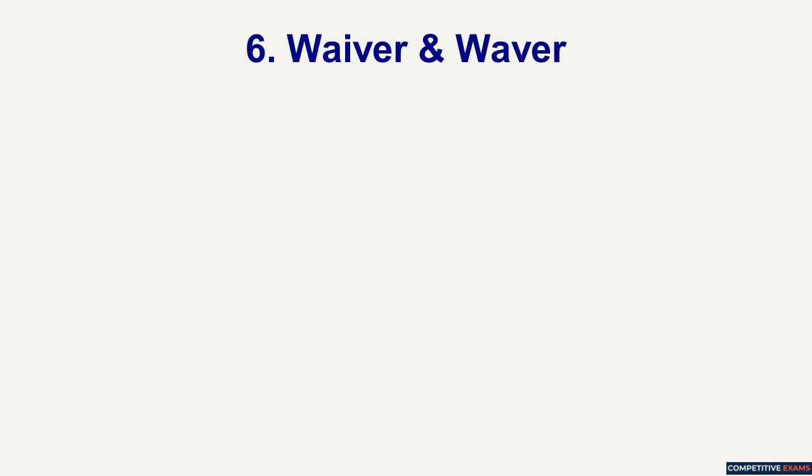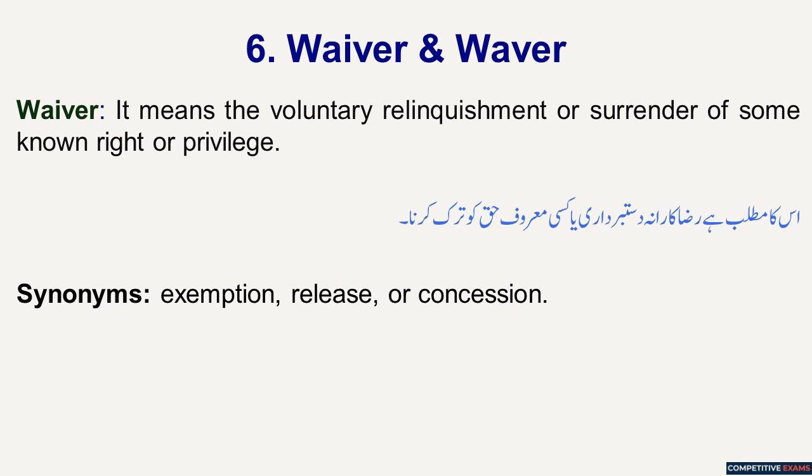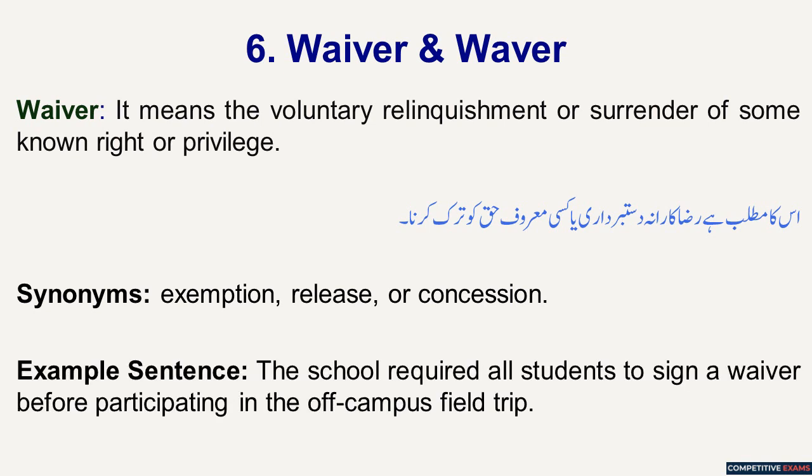Waiver and Waver. Waiver means the voluntary relinquishment or surrender of some known right or privilege. In Urdu, razakarana taur par dastbardari ya kisi marouf haq ko tark karna. Its synonyms are: exemption, release, or concession. Example sentence: The school required all students to sign a waiver before participating in the off-campus field trip.